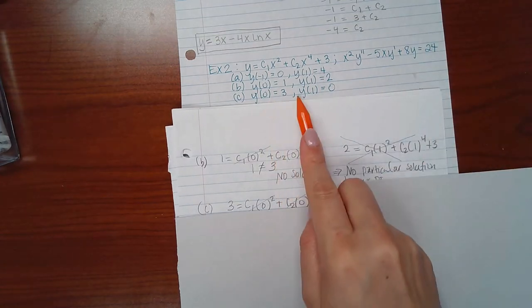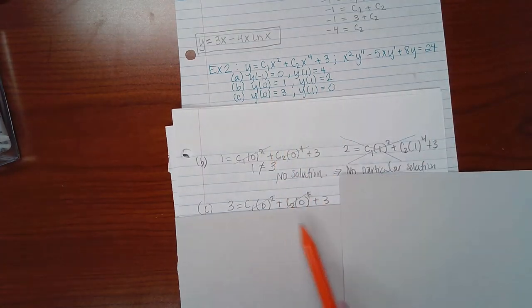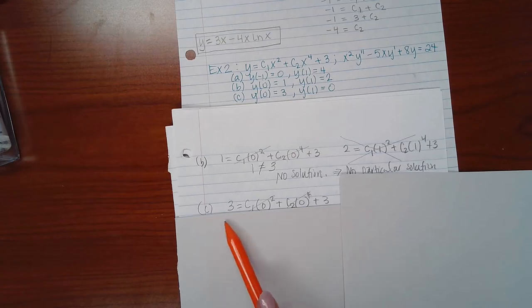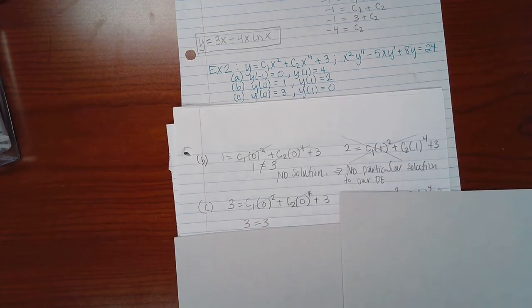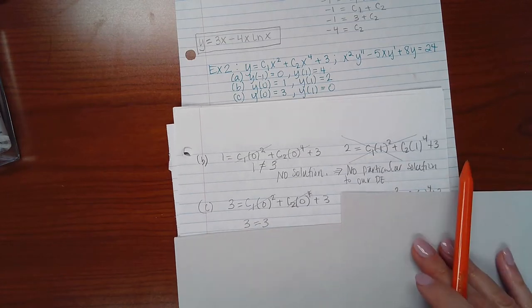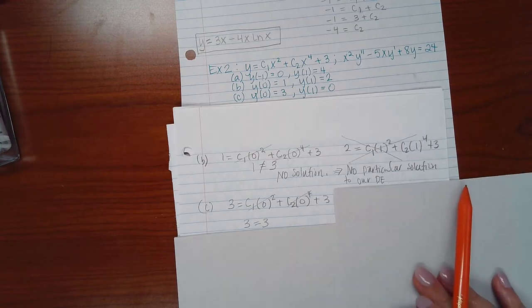So for part C, when X is 0, Y is equal to 3. So I've plugged in 0 for X and I plugged in 3 for Y. However, this term goes to 0, this term goes to 0, which means I end up with the statement 3 equals 3. That means there's an infinite number of solutions.